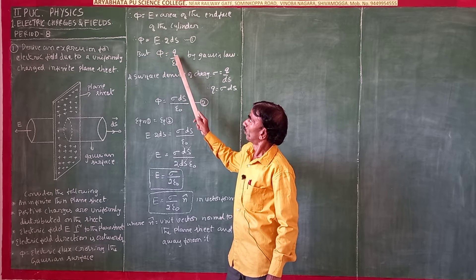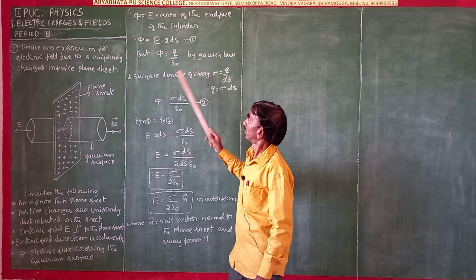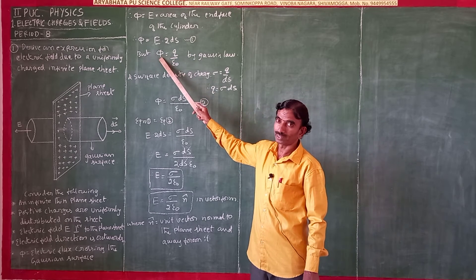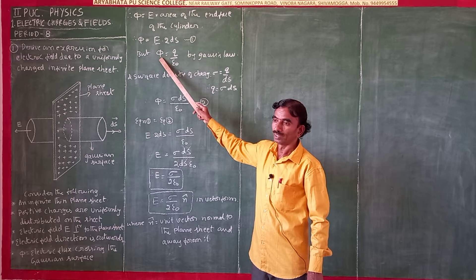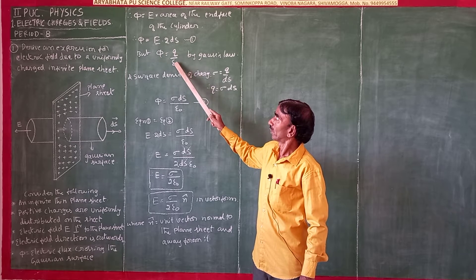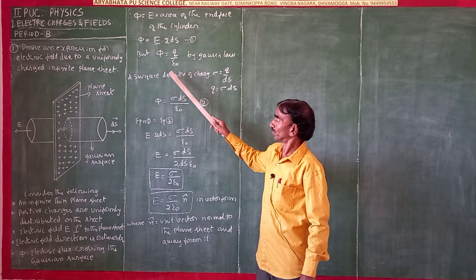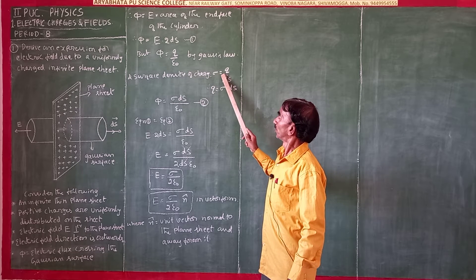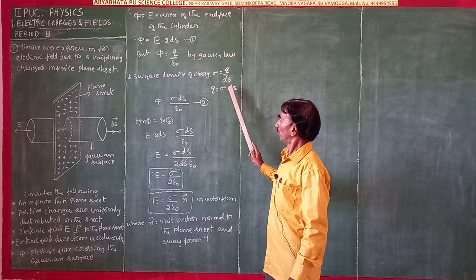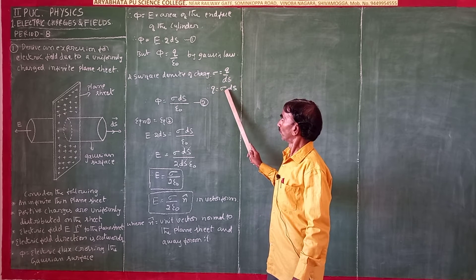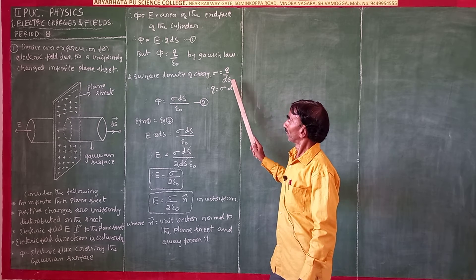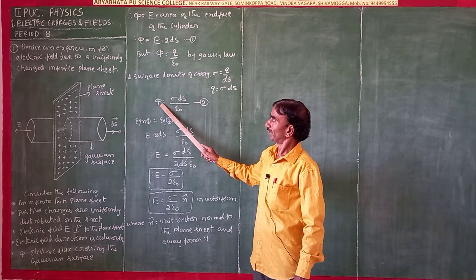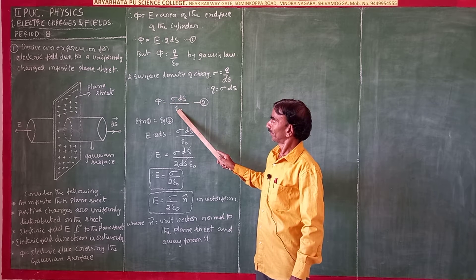But by Gauss's law, phi equals Q divided by epsilon naught. The total electric flux over the surface equals one over epsilon naught times the total charge. The surface charge density sigma equals Q divided by dS, so Q equals sigma times dS. Therefore, phi equals sigma dS divided by epsilon naught. This is equation 2.